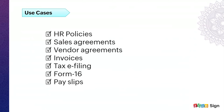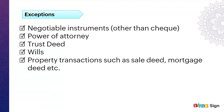Let us look at some of the use cases. Businesses can use Aadhaar eSign to sign documents in almost all cases. Some examples are HR policies, business agreements like sales agreements, vendor agreements, Form 16, payslips, and so on. Even though businesses can sign most documents electronically using Zoho Sign's Aadhaar eSign feature, there are certain documents prescribed by law which have to be signed physically only: negotiable instruments other than cheques, power of attorney, trust deed, wills, and property transactions such as sale deed and mortgage deed. Now over to our product expert Rajiv.